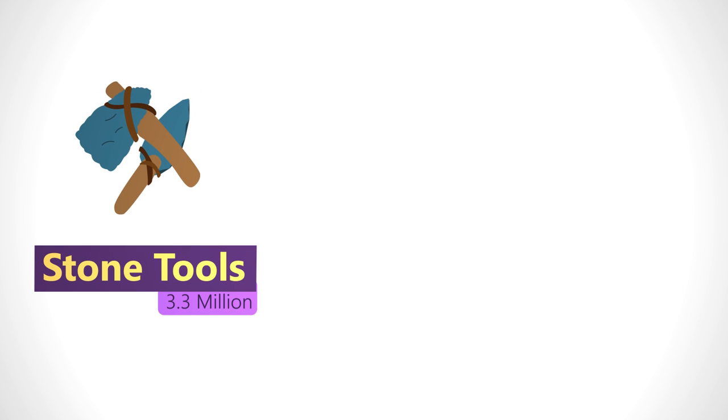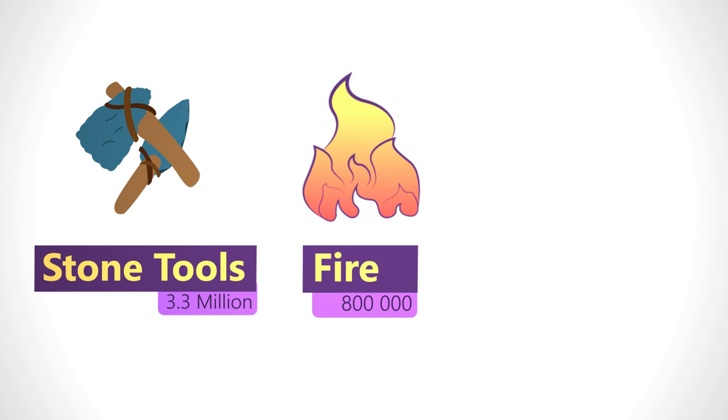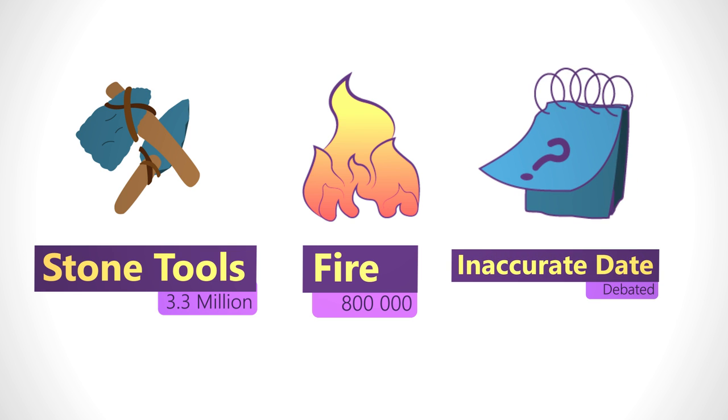3.3 million years ago we were using stone tools, and we started using fire somewhere between 1.8 million years ago and 800,000 years ago. As you can tell, accurate dates are hard to settle on and are always changing and being debated.